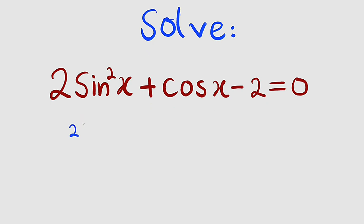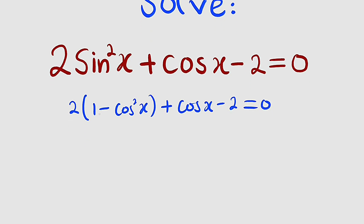So 2 multiplied by 1 minus cosine squared x, then plus the other cosine x minus 2, the whole of this equal to 0. If you expand the parentheses, 2 multiplied by 1 is 2 minus 2 times cosine squared x, then plus cosine x, then minus 2, the whole of this equal to 0.